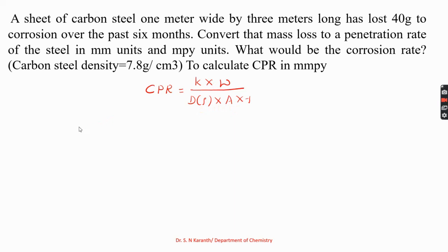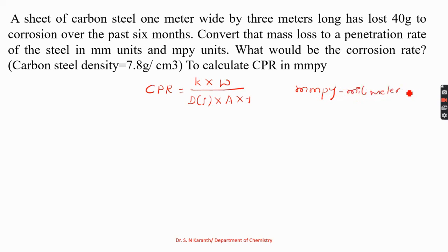Problem 1: A sheet of carbon steel, 1 meter wide by 3 meters long, has lost 40 grams to corrosion over the past 6 months. Convert that mass loss to a penetration rate of the steel in MMPY units and MPY units. The density of carbon steel is 7.8 grams per cm³. We will express CPR in two units: MMPY (millimeter per year) and MPY (mils per year).